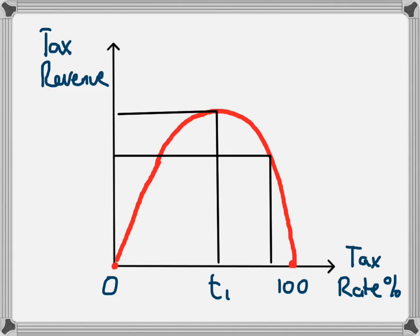So if the tax rate here is T2, then the revenue will be much smaller than what it could potentially be. That's the Laffer Curve — it shows that there's an optimal tax rate, and that moving higher or lower than that will lead to a decrease in the tax revenue received by the government.